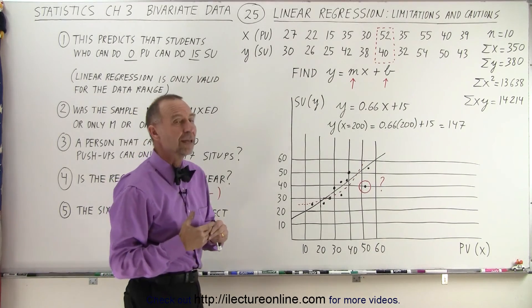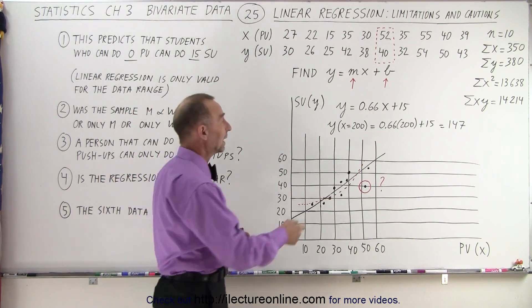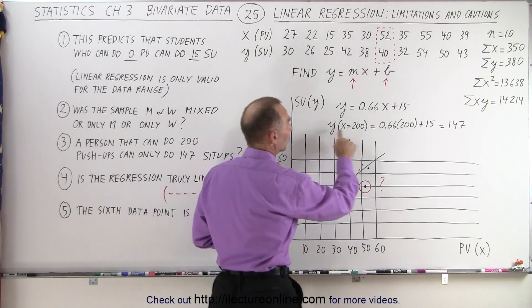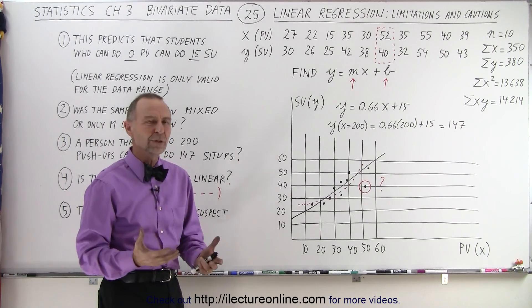Let's say we want to try to see how many sit-ups somebody can do when they can do 200 push-ups. So we'll let X equals 200 and the result of that came out to be 147 sit-ups. So, does that seem reasonable?